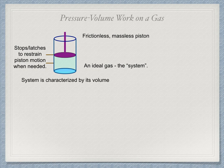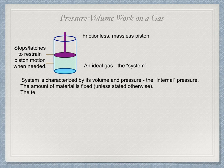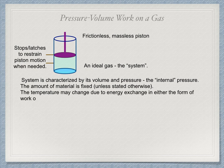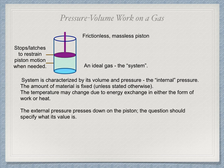The system, which is the gas in the cylinder, is characterized by its volume, pressure, temperature, and the amount of material present. For an ideal gas, the ideal gas law describes the relations between these properties.